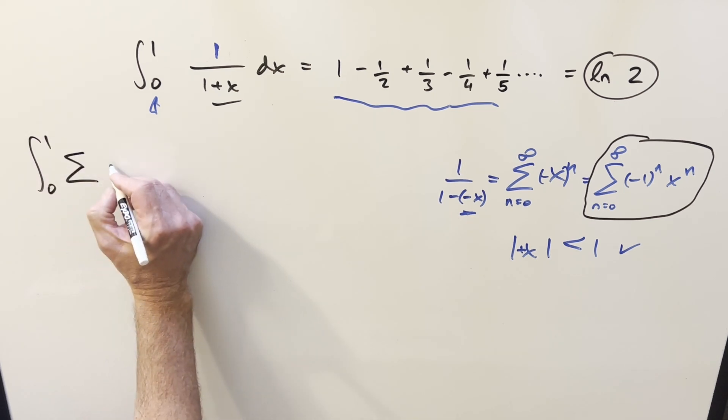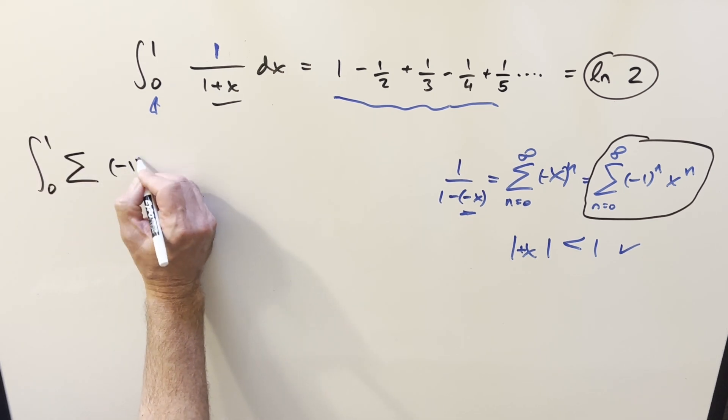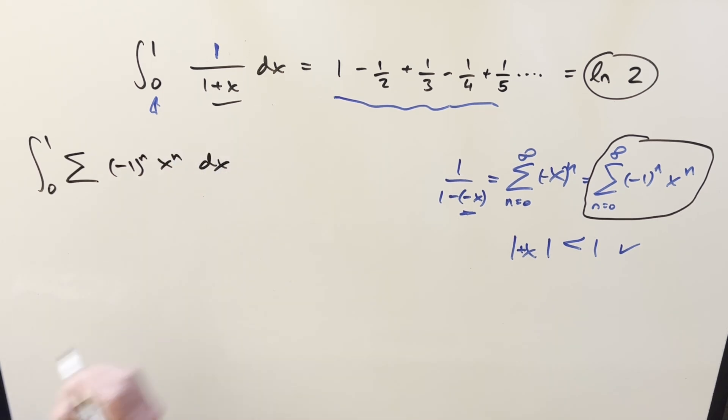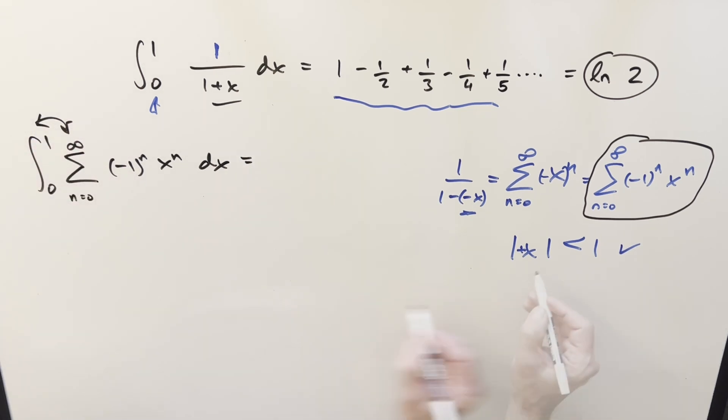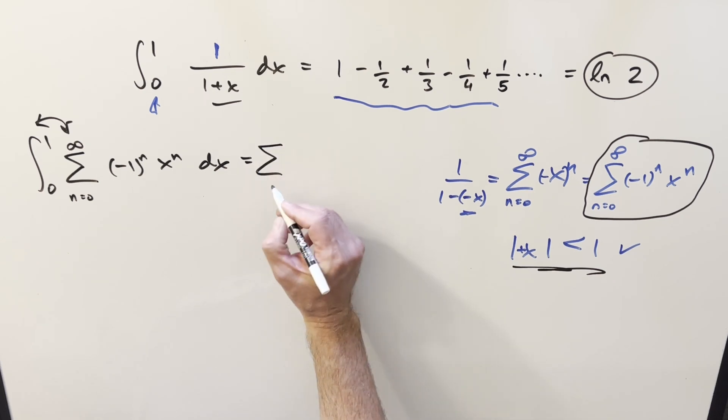So when we do that, we're still integrating from 0 to 1. We have this sum of minus 1 to the n, x to the n, dx. And then all I want to do is let's reverse the order of the sum and the integral. The reason I can do that is because we have our absolute convergence. So that allows me to make this switch.